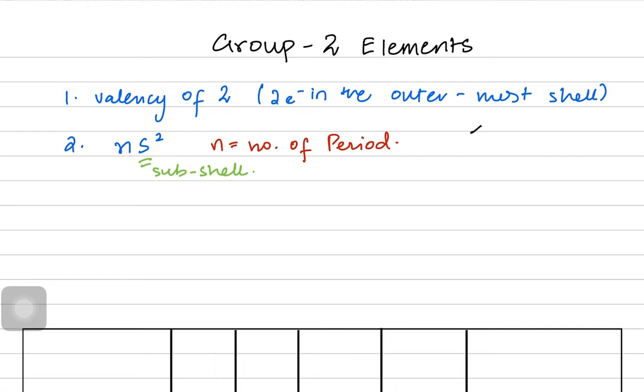Just to recall, the S subshell has a spherical shape, and within it there are two electrons, so their ending configuration is always S2. Another important feature is that they are metals. They lose electrons, so they are highly electropositive. We'll see how some are more electropositive than others.